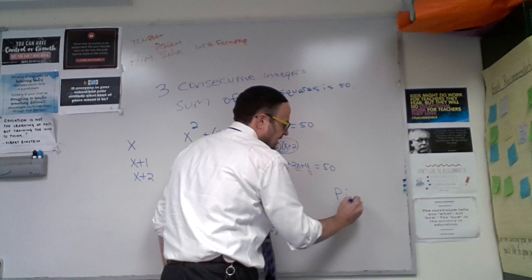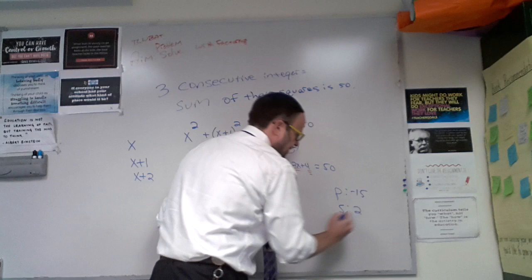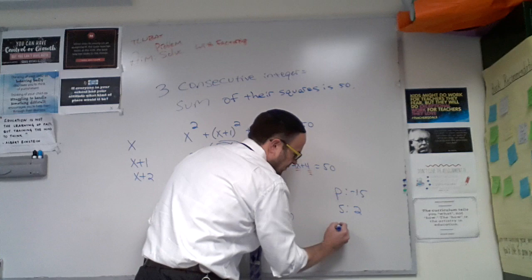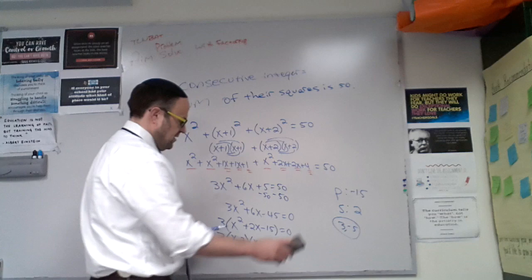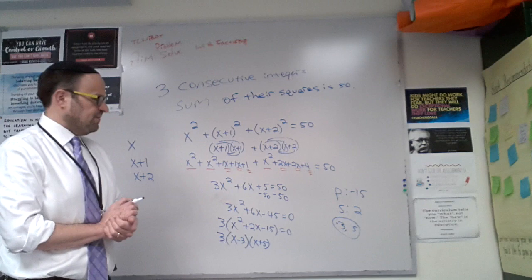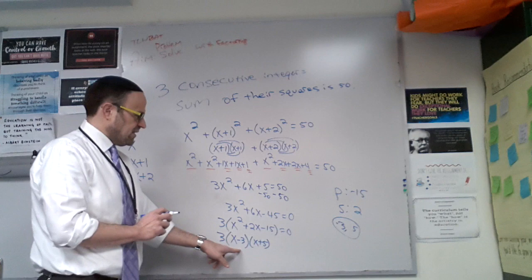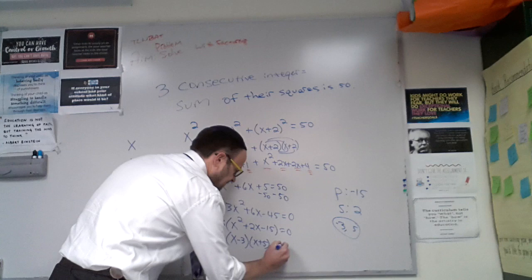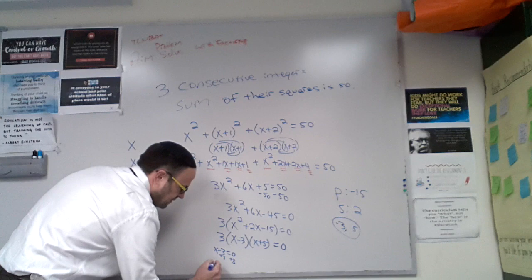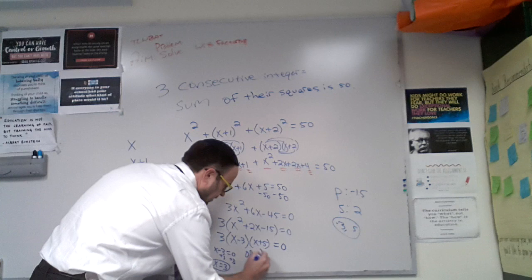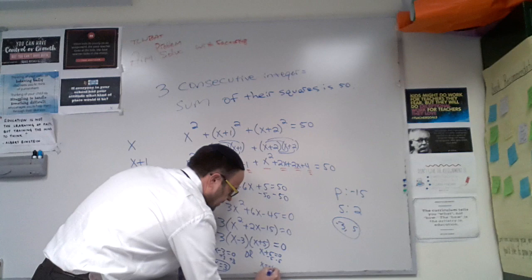If you need to write out the factors over here on the side, you can. But I think this one is pretty quick work for us. So negative 15, we can see the pair of numbers that I'm looking for is negative 3 and positive 5. Always a good idea to write it out because sometimes you flip the signs in your head. x - 3 because of the negative 3, x + 5 because of the positive 5. Now the final step. The 3 doesn't matter because 3 obviously doesn't equal 0. So, x - 3 = 0, so x = 3, or x + 5 = 0, x = -5.